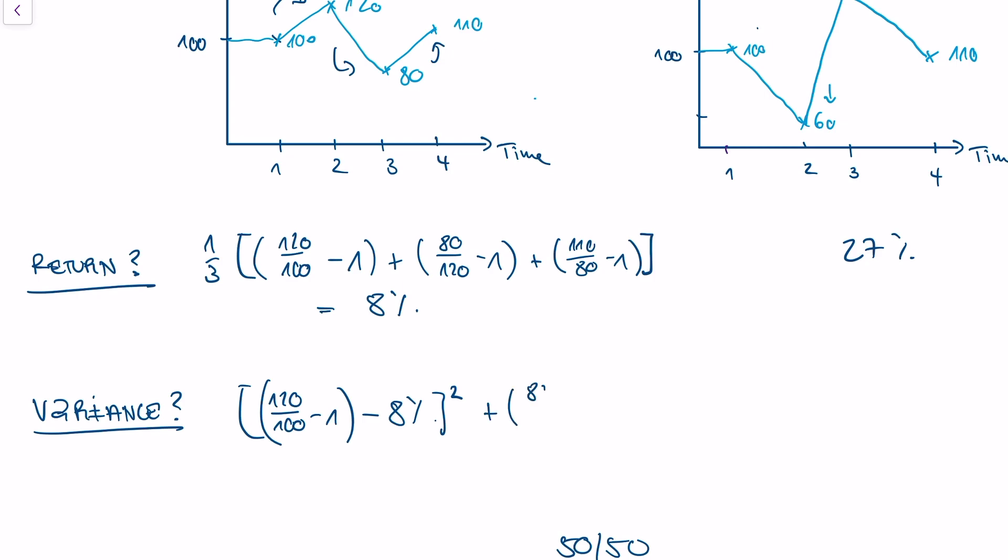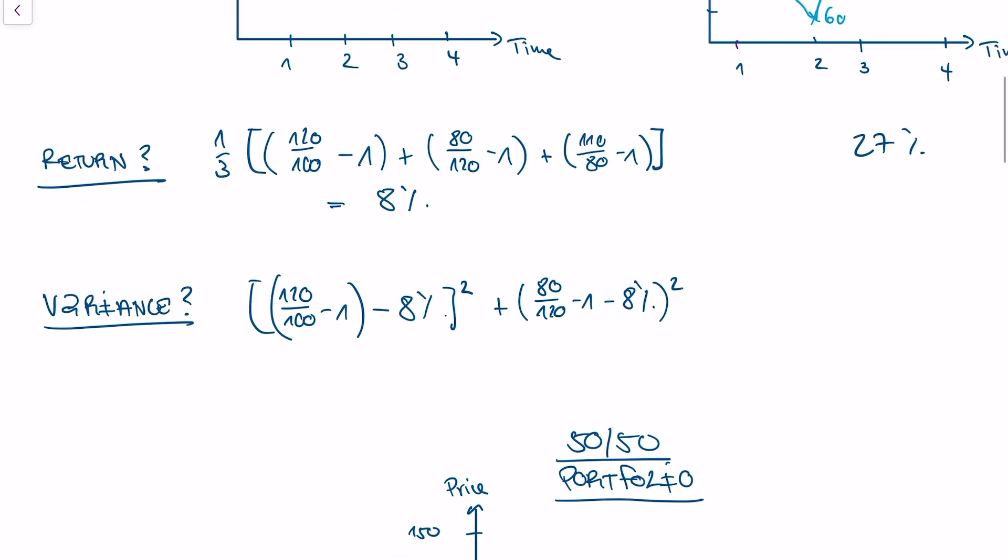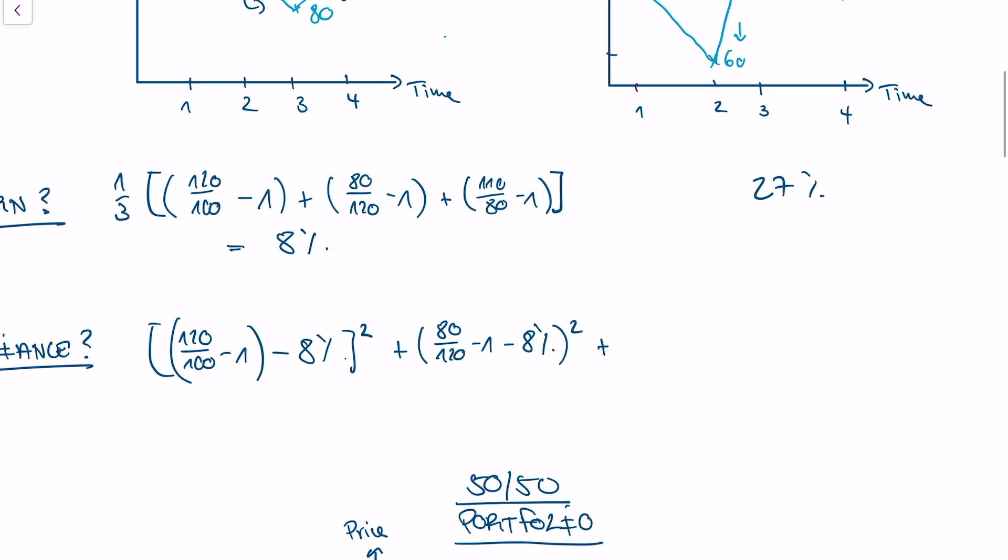I do the same for jump 2 and jump 3. So I take my return, 80 divided by 120 minus 1, and I subtract the average return, 8%, and I square it. And I do the same for the third return.